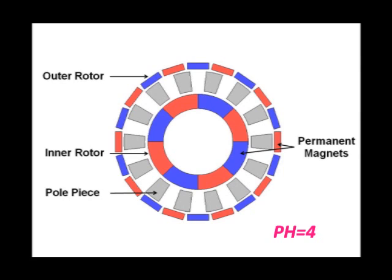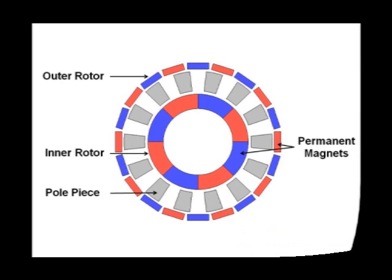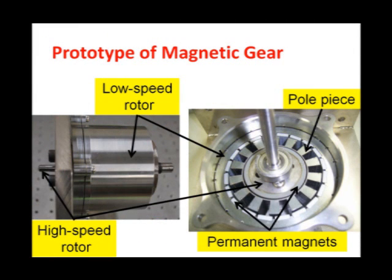The inner rotor is the high-speed rotor with 4 pole pairs. 10 plus 4 is 14, and this is the number of pole pieces. The gear ratio is 10 over 4, or 2.5.